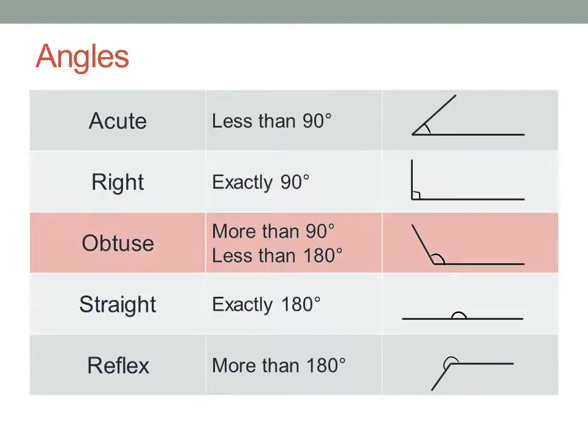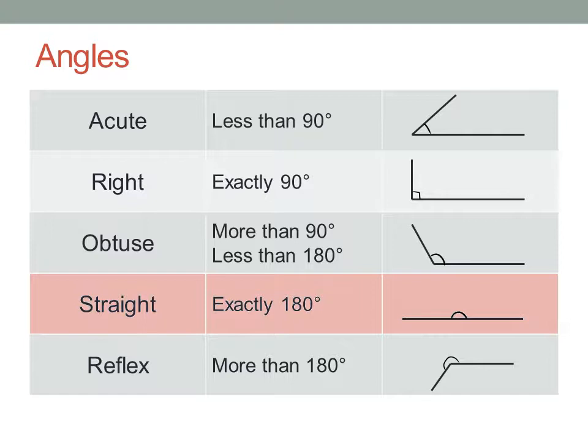And an obtuse angle is an angle bigger than ninety degrees. Now if you look at any point in the middle of a straight line, and imagine it's actually a point where two separate lines meet, you could say that there's a one hundred and eighty degree angle between the two halves of the line at that point.